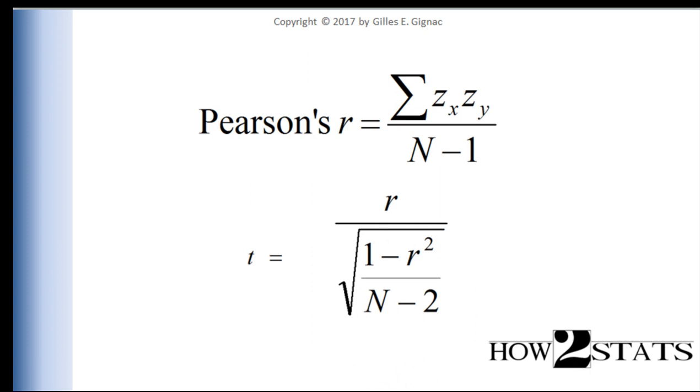And that standard error can be used to transform the R value into a T value. And then we can make reference to the T distribution to find out the chances of having obtained an R value equal to something or greater under the expectation that the null hypothesis is true in the population.